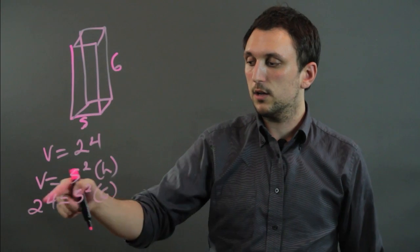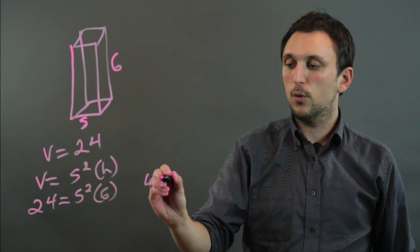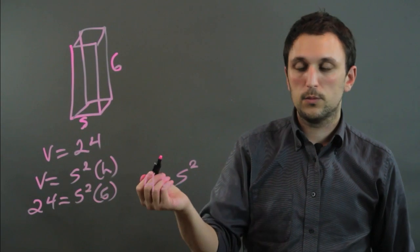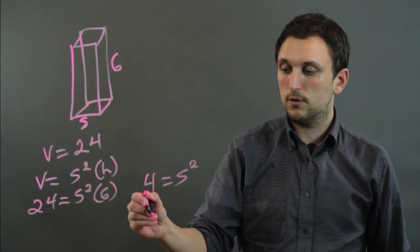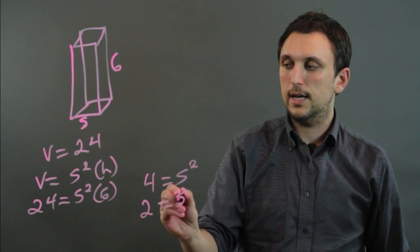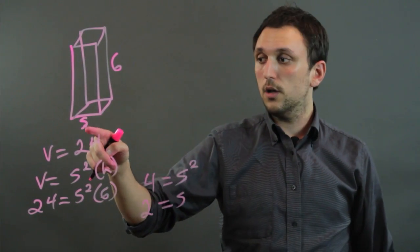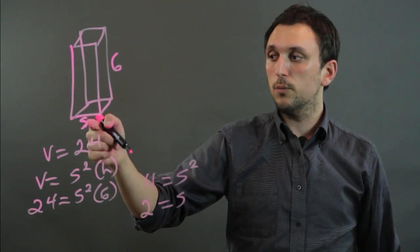So then we just divide by 6 on each side and we would end up with 4 equals s squared. And we take the square root of each side and we get 2 equals s. So here the side or the base edge length would be 2.